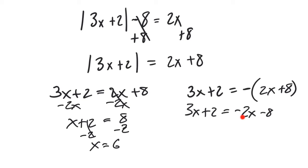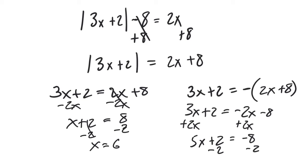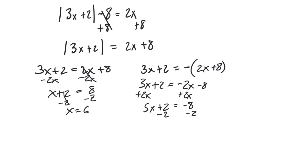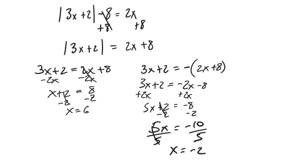On the other problem, to get rid of that 2x I want to add 2x to each side, which gives me 5x plus 2 is equal to negative 8. Now I subtract 2 from each side, giving 5x equals negative 10. Divide by 5 on each side, and x equals negative 2. So my two answers are 6 and negative 2.